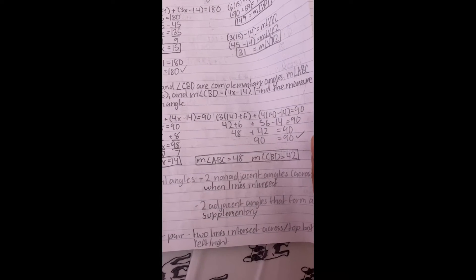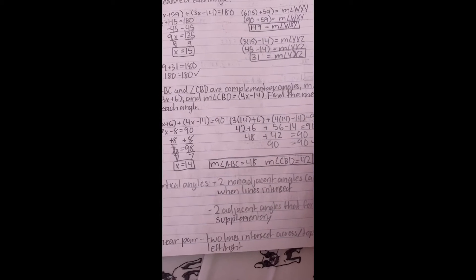M angle ABC is 48 degrees and M angle CBD is equal to 42 degrees.